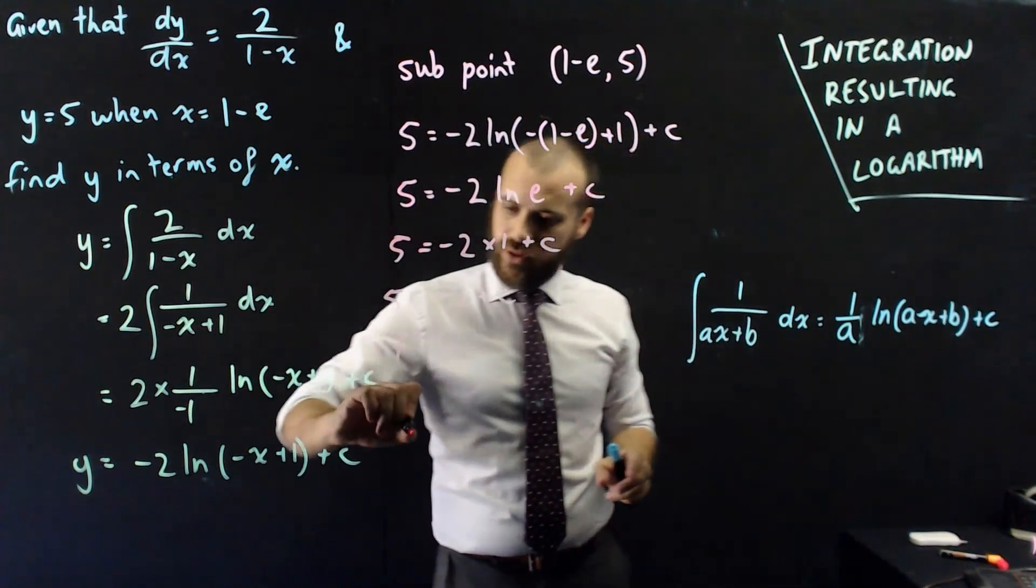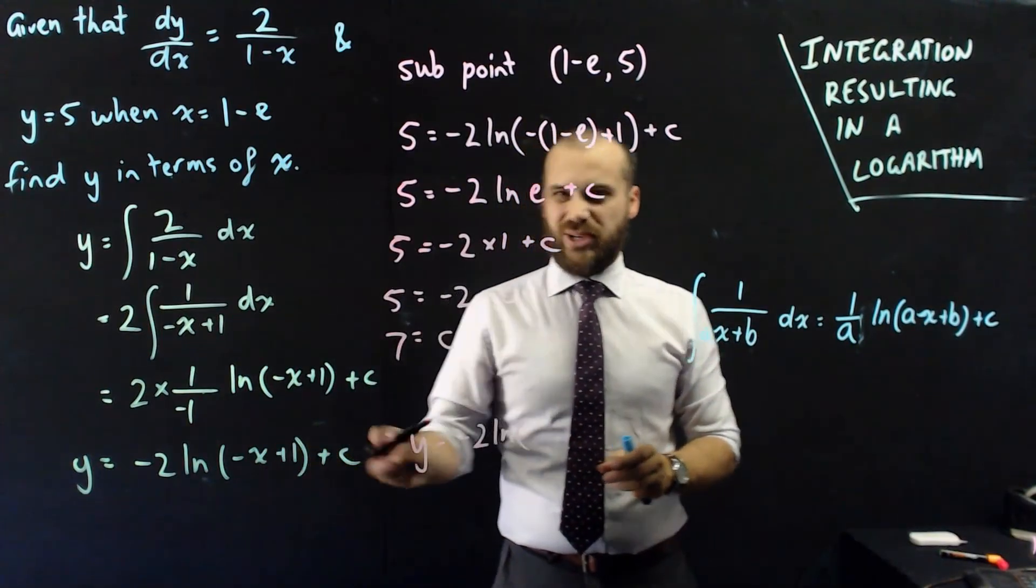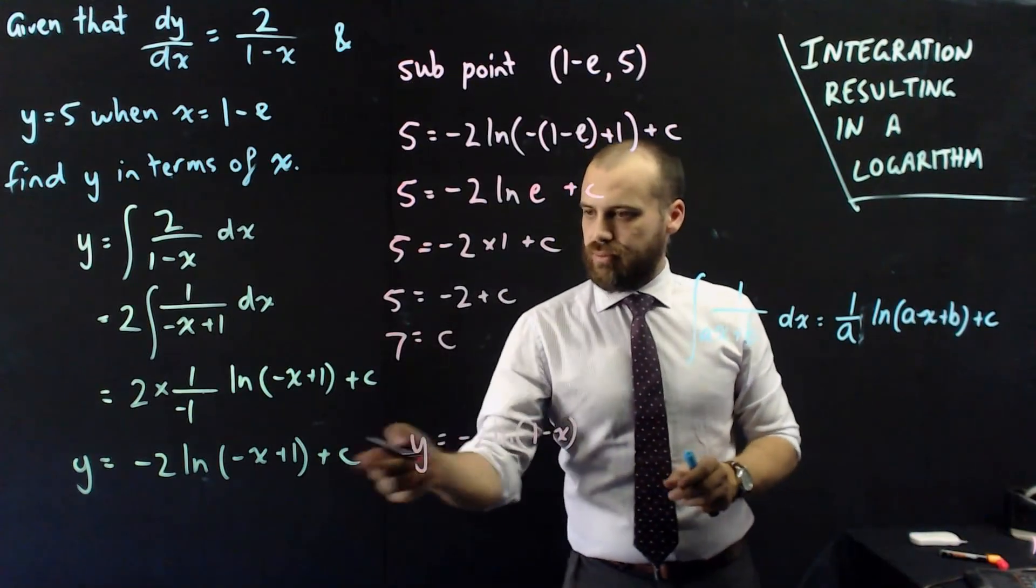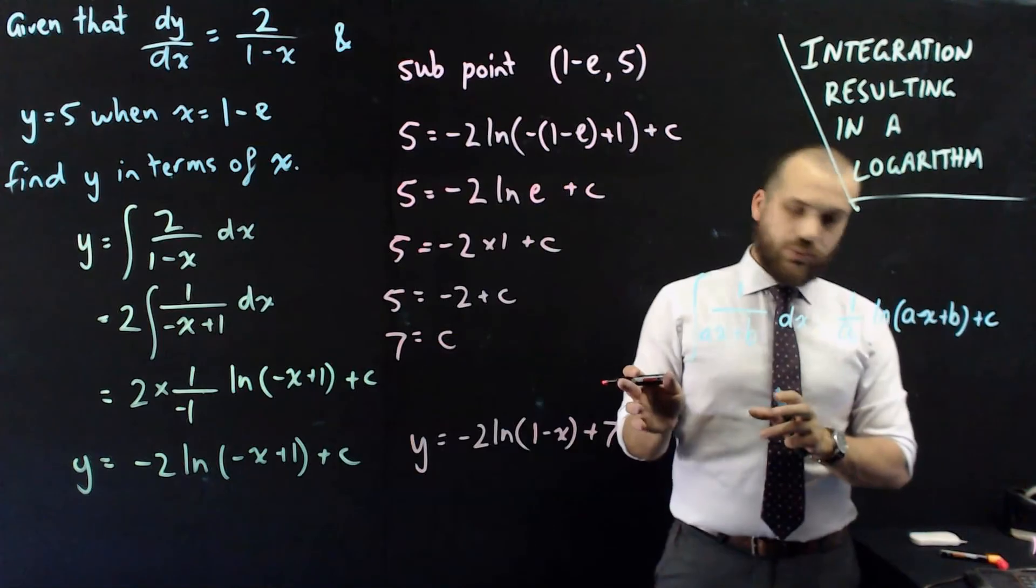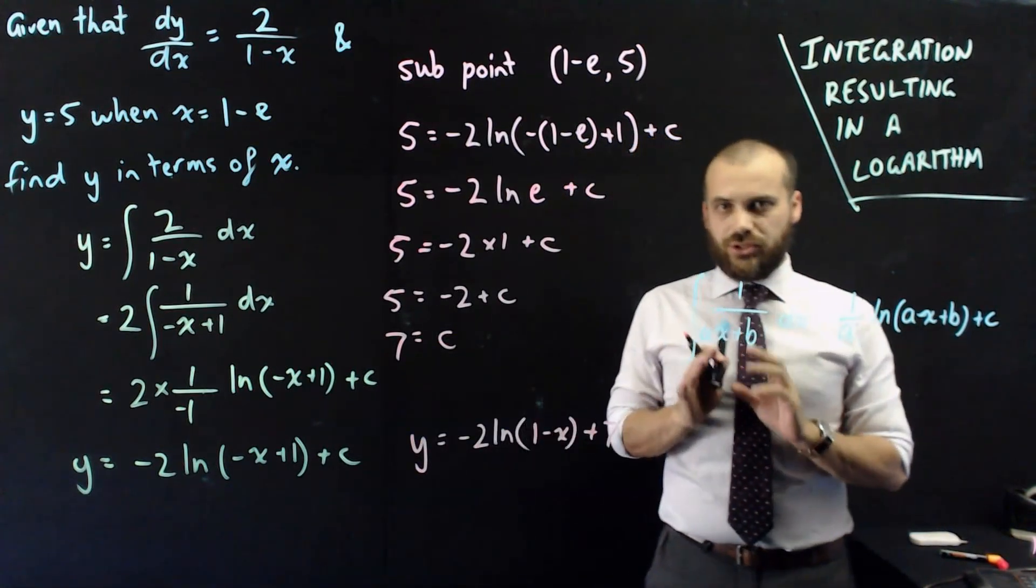To finish it all off, the equation is y equals negative 2, ln. I don't like that negative x plus 1. I'll just rearrange it to be 1 minus x. That's a bit neater. And plus 7. All right, so that's one of those little ones where you're doing the plus c. But really, this video is about integration resulting in a logarithm.